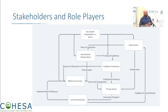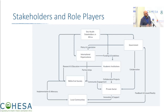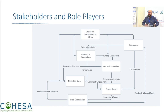If these are the role players, what are some of the recommendations? We have government, which has influence on international organizations and academic institutions. Academic institutions also play a big role in funding, because we are limited by the funding we receive and the guidelines that come with it. Without that, we really can't do all the work with collaborative partners, partnerships, and civil society.